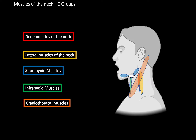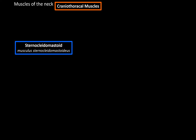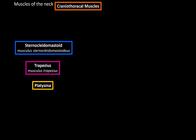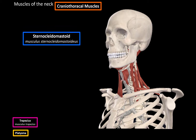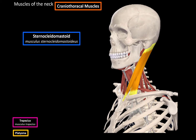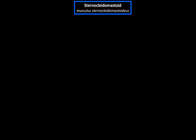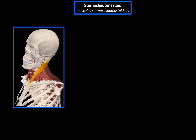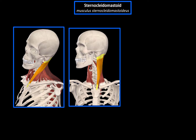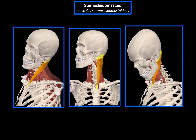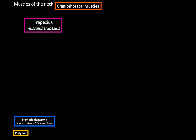Now let's go over the craniothoracic muscles, which include the sternocleidomastoid, trapezius, and platysma. The sternocleidomastoid consists of large muscles on the side of the neck. They originate from the sternum and the clavicle, then go up and insert at the mastoid process as well as the superior nuchal line. Unilateral contraction will laterally flex the head and rotate it to the opposite side. Bilateral contraction of the anterior fibers will ventrally flex the head, and bilateral contraction of the posterior fibers will dorsally flex the head.